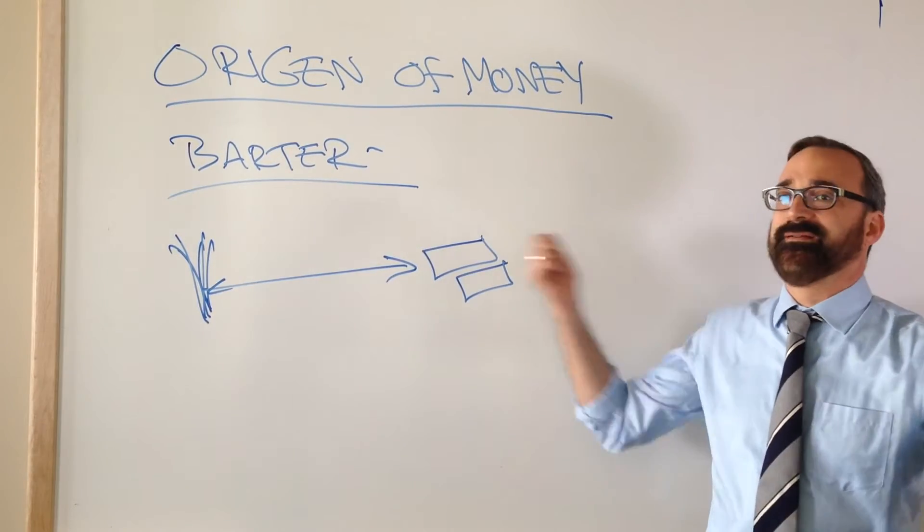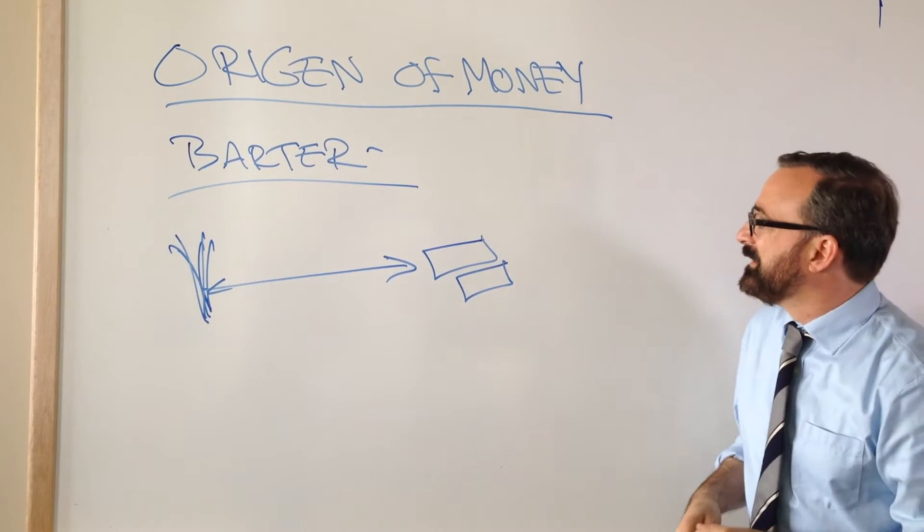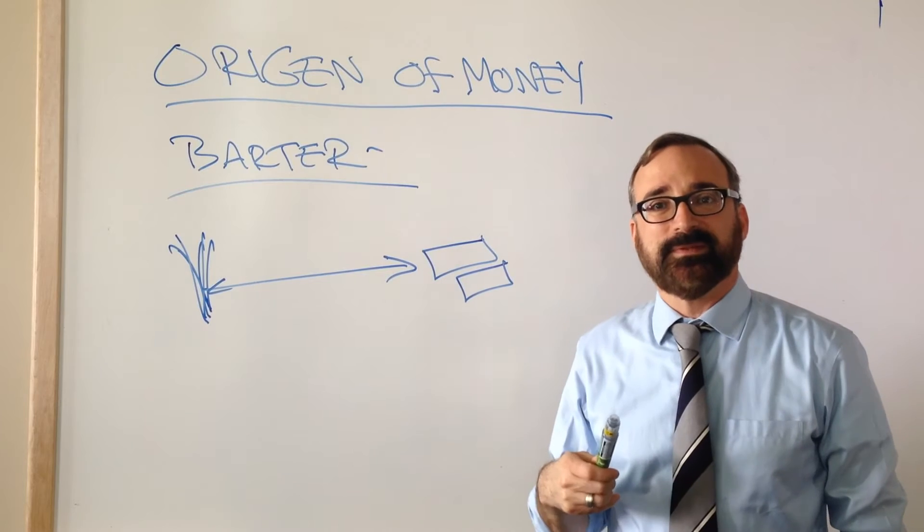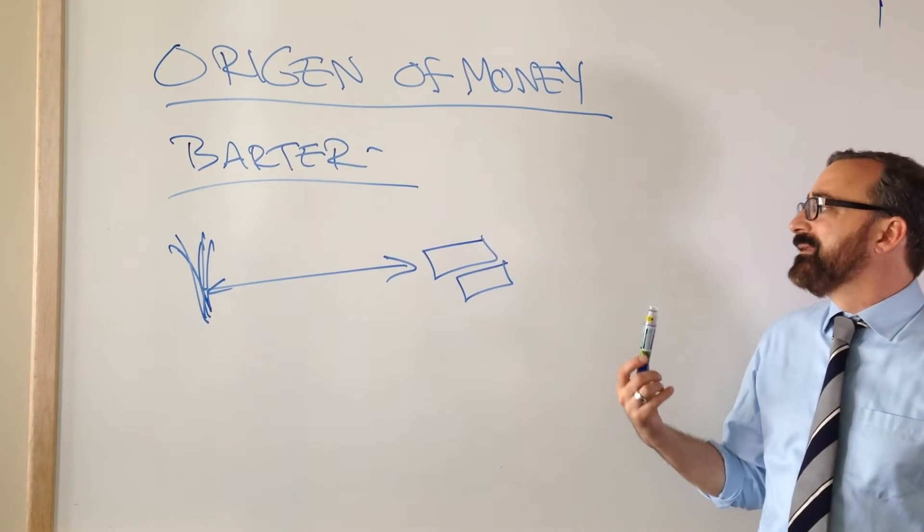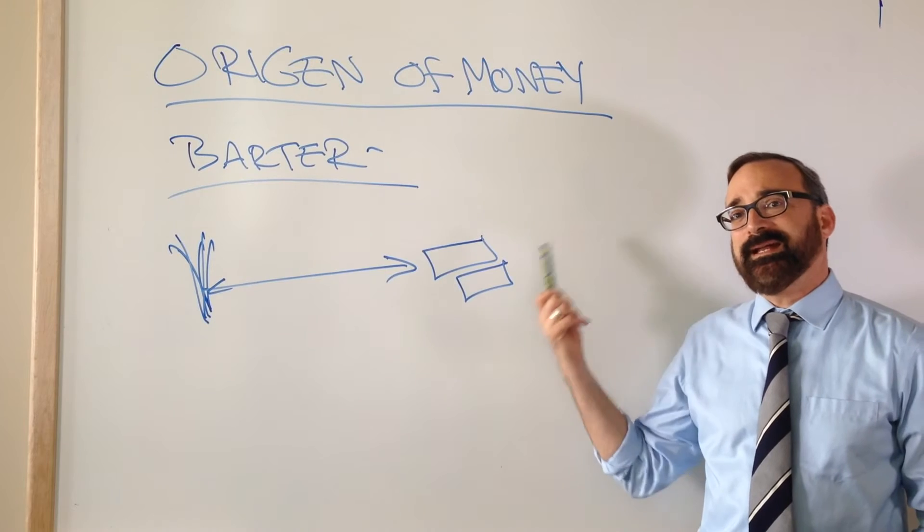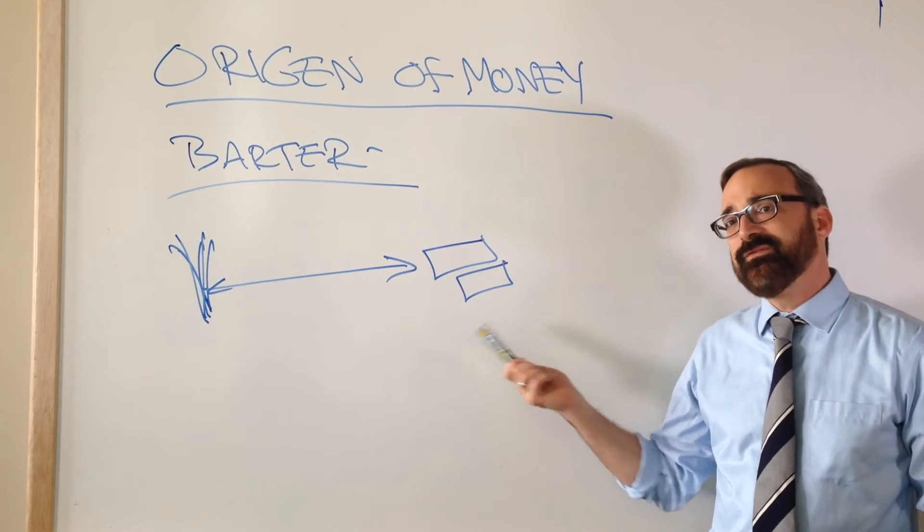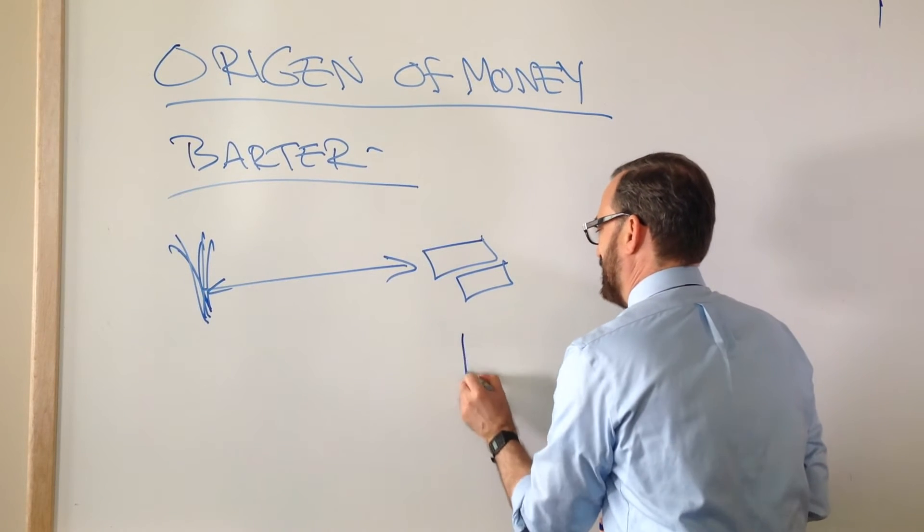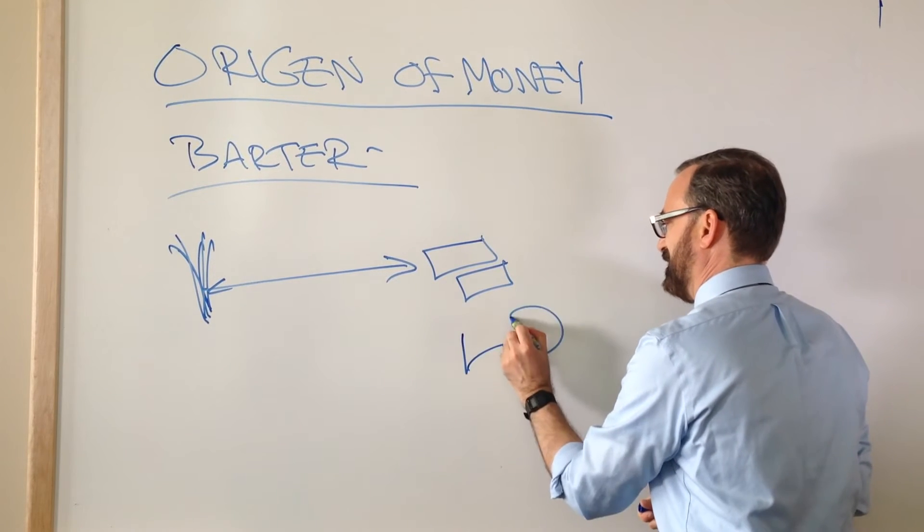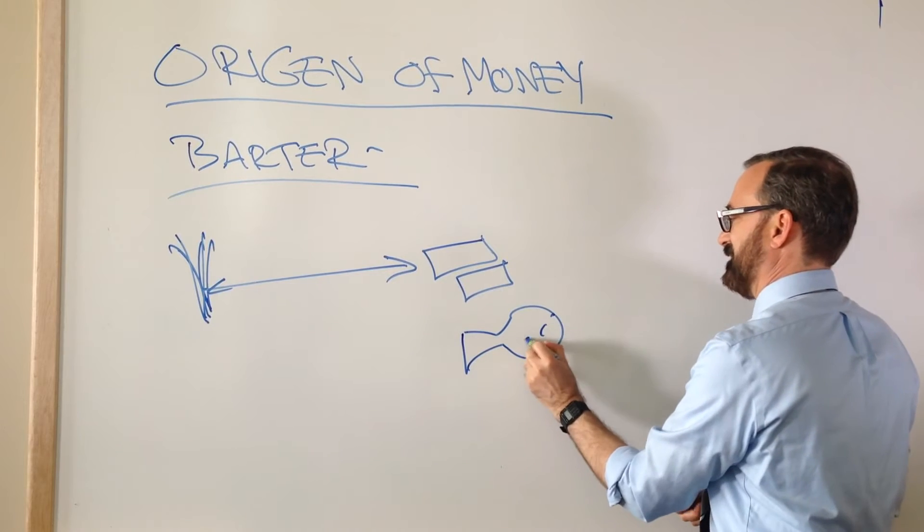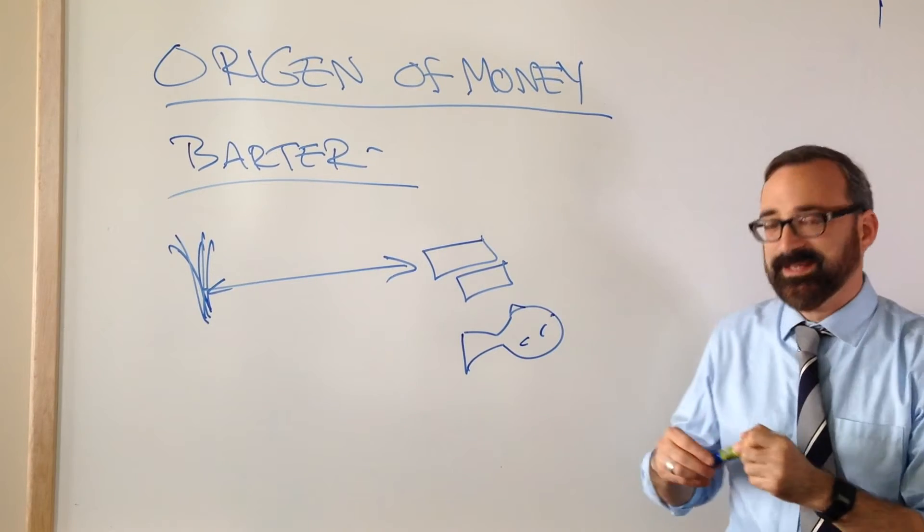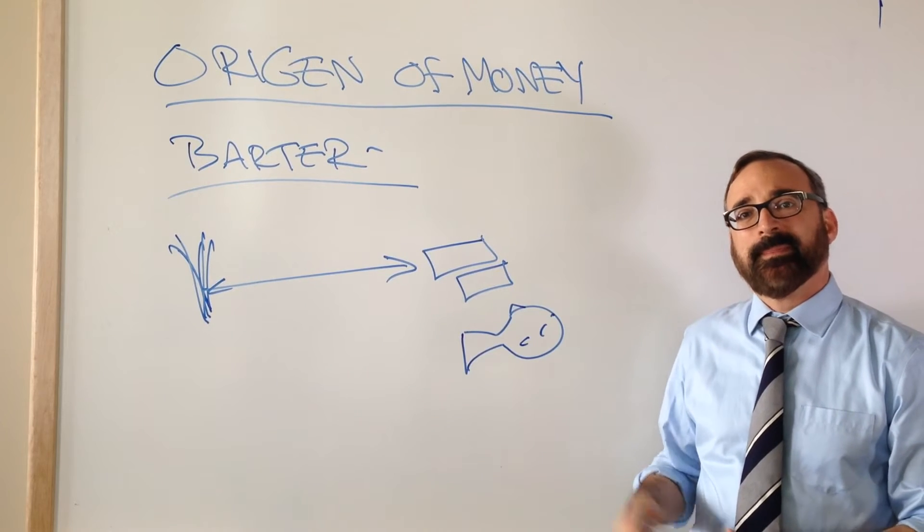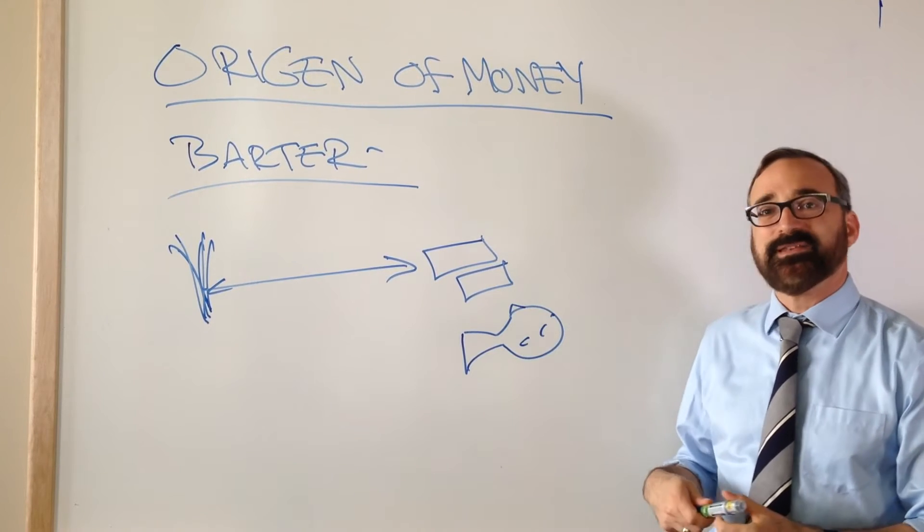Now there's a problem with barter, and Jevons and other economists write about this problem. The problem is: what if I have grain and you've got stone but you don't want grain? What you want are, let's say, fish. What do we do?